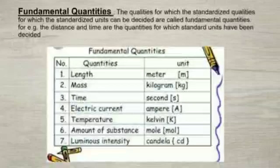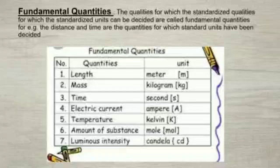Now let's know about fundamental quantities. Fundamental quantities are those physical quantities that cannot be expressed in terms of other quantities. It is independent on its own. It is enough to select a few out of the many quantities and standardize the unit. Such quantities are called fundamental quantities and their units are called standard units. A standard fundamental unit must be available to all and it must not be variable.